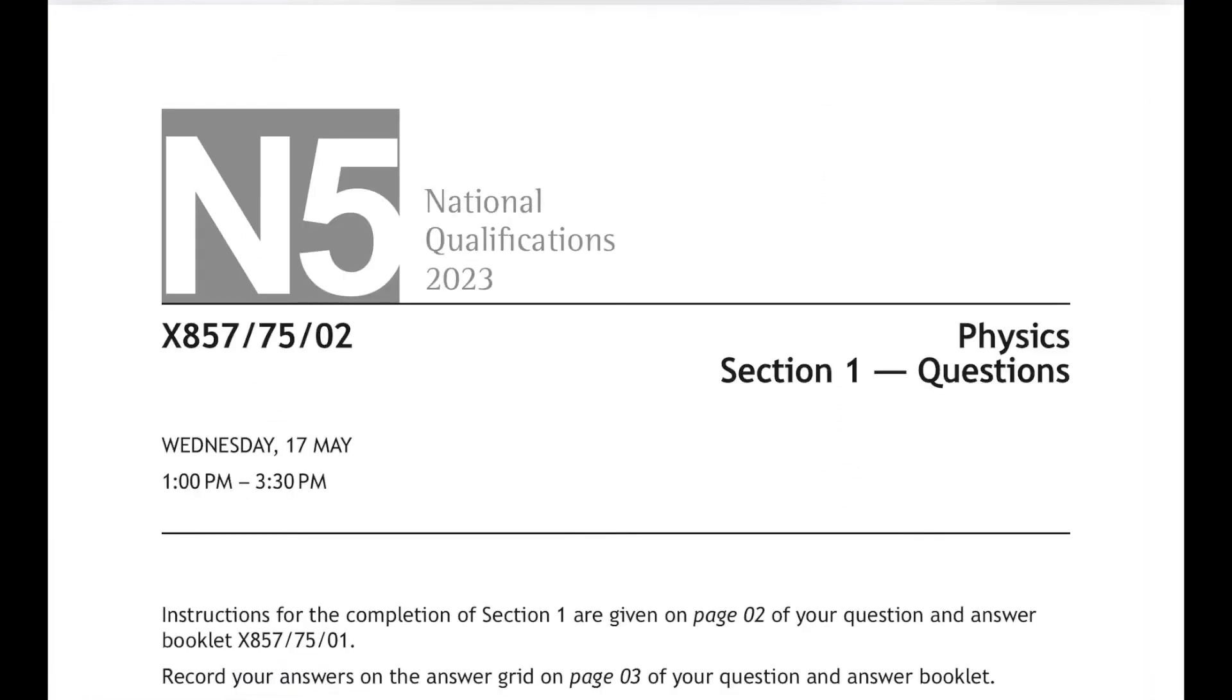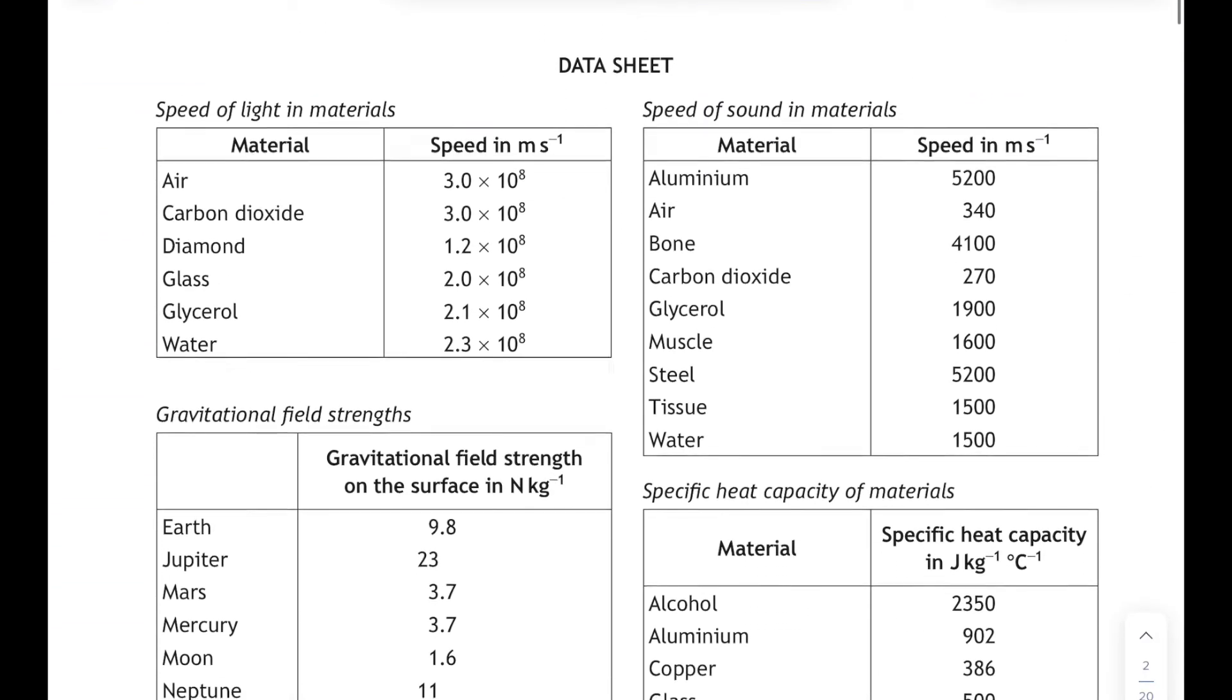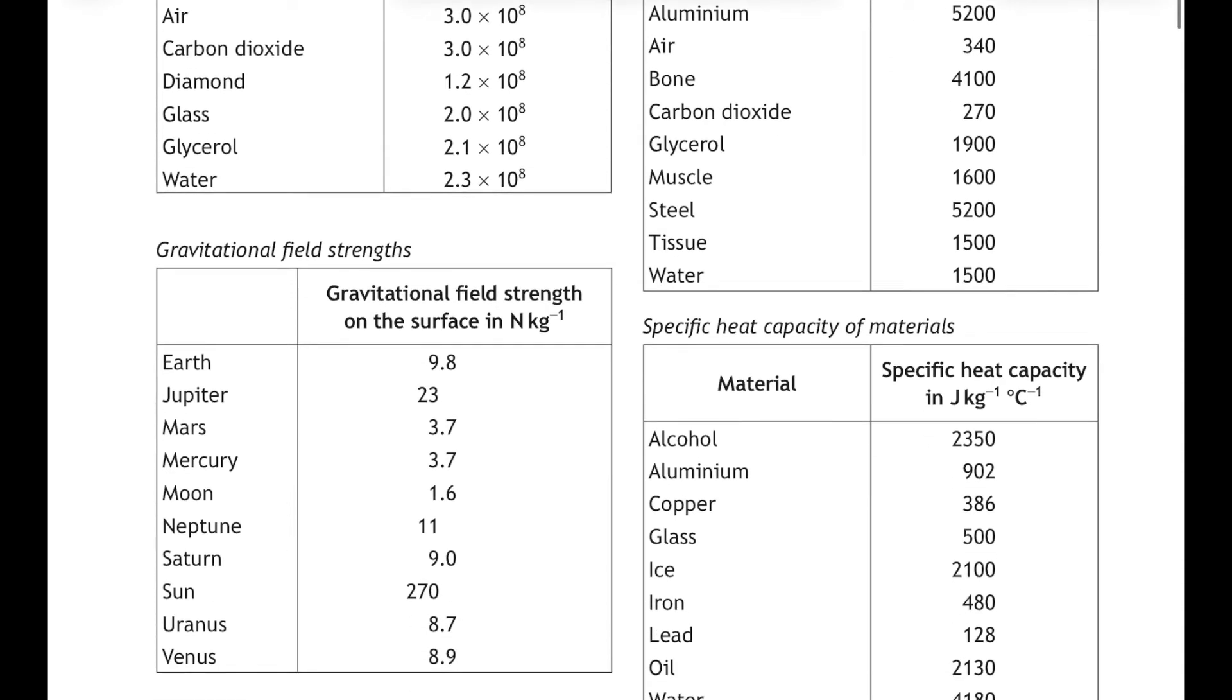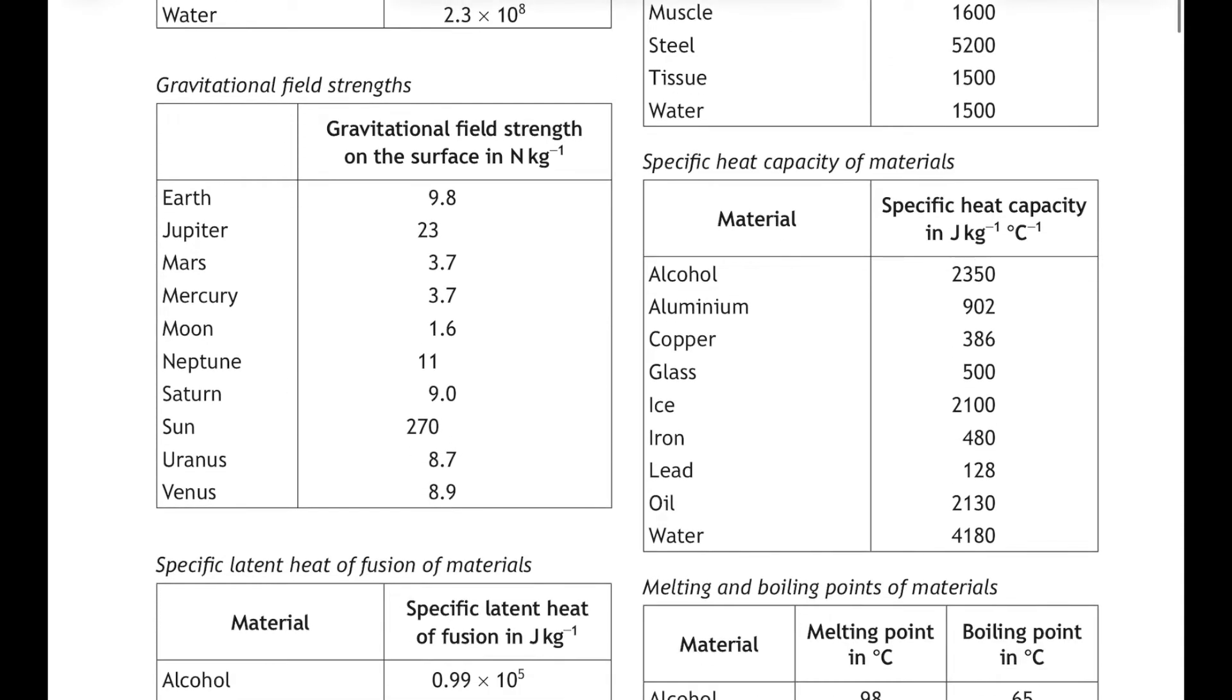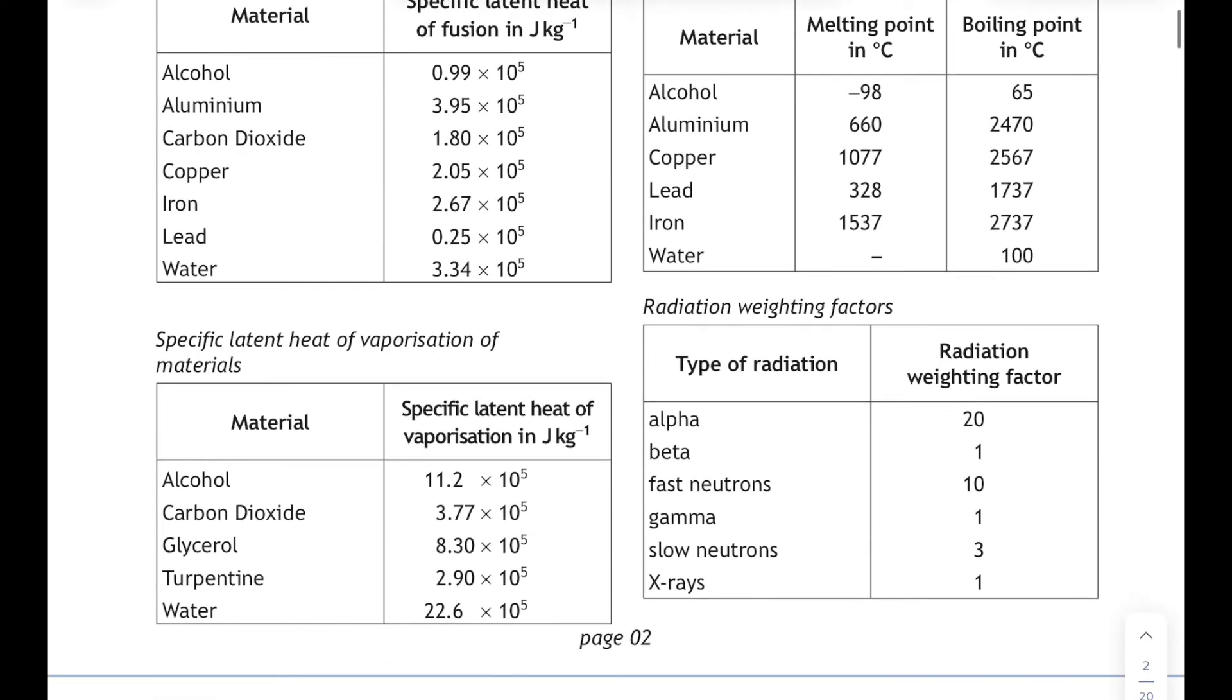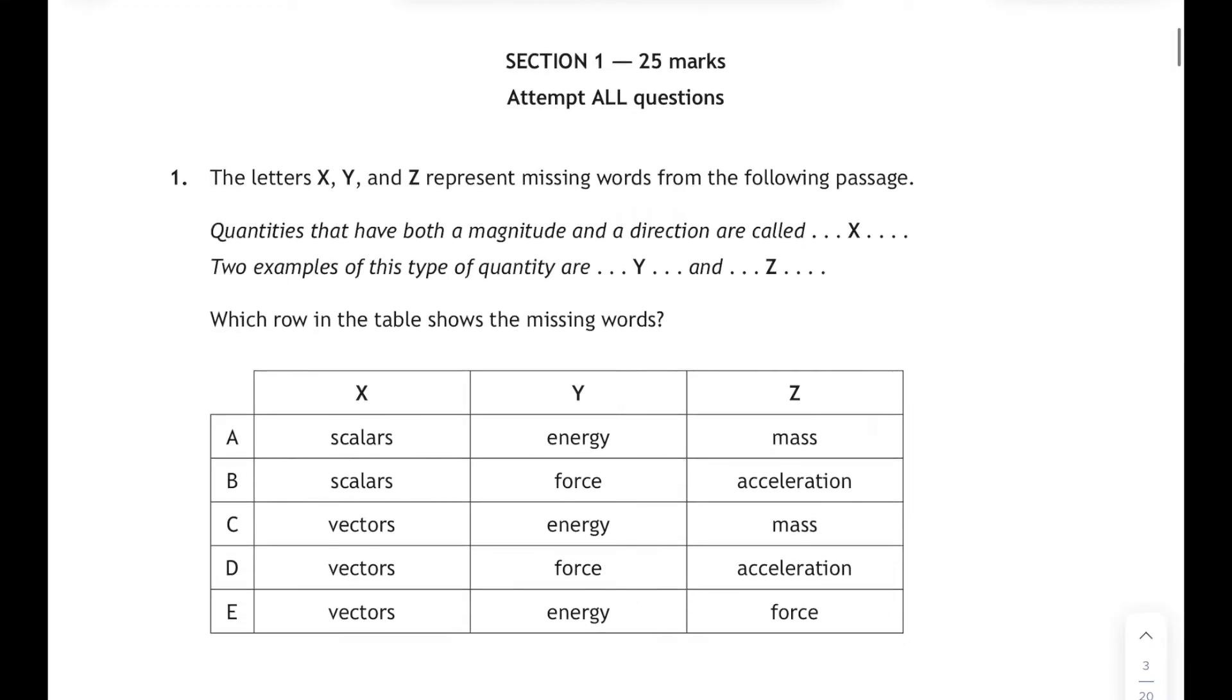We will refer to that whenever we get a calculation or a numerical question that requires a relationship. Right, here we go then. We're only going to have a look at the first 15 questions in this video. So it's the 2023 paper. The whole paper is two and a half hours, but the multiple choice should take you about 45 minutes for the 25 questions. First thing you'll see is the data sheet contains all the numbers you might need during the paper. If the data you're looking for isn't in the question, chances are it's going to be on this data sheet.